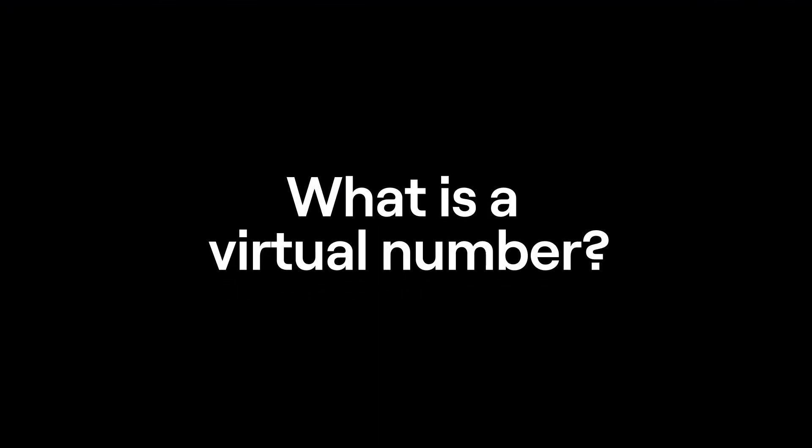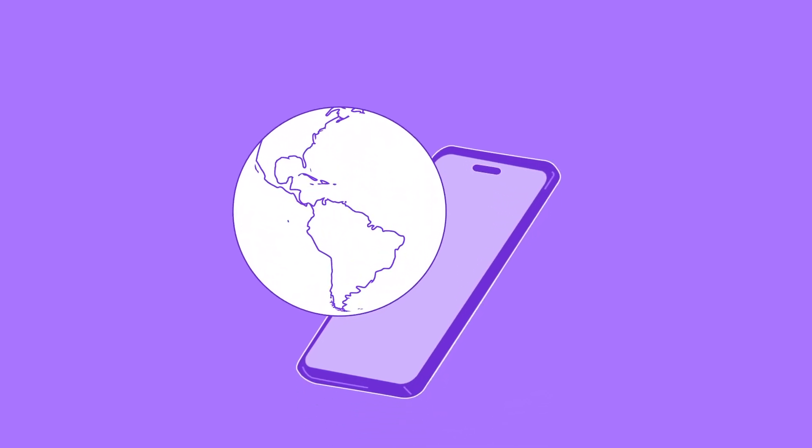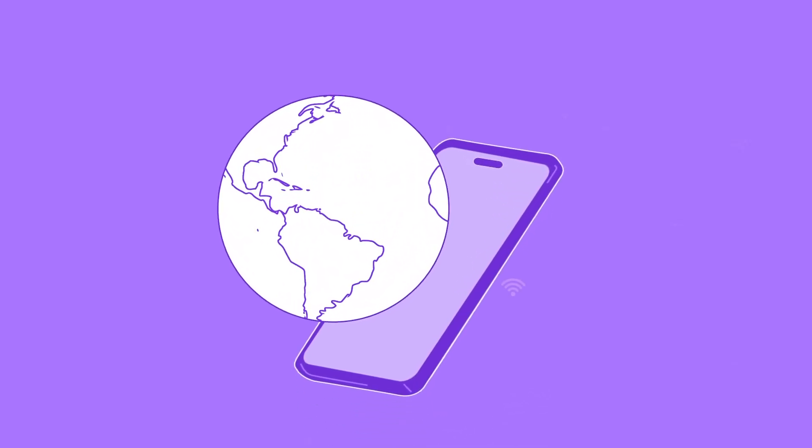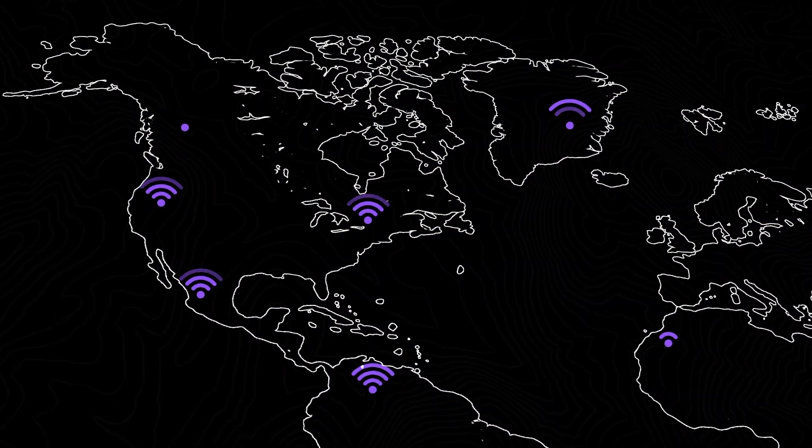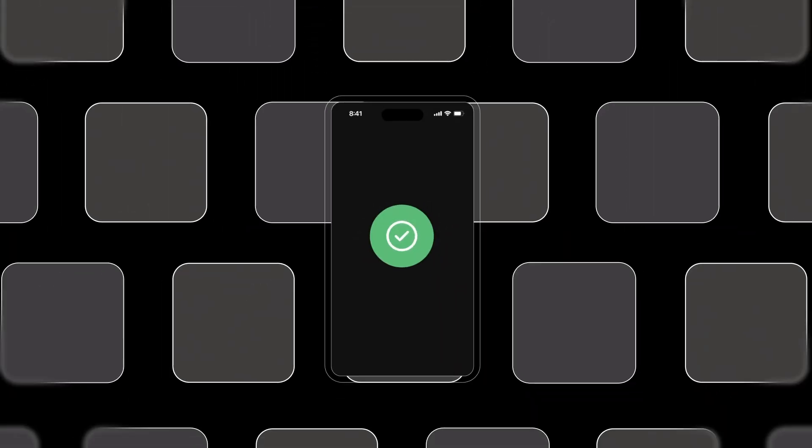A virtual phone number lets you access a phone number from a computer or smartphone. In other words, virtual phone numbers are cloud-based, so you could actually use them anywhere with an internet connection. Just log into your cloud phone system on your phone or computer, and you can call and text your contacts.